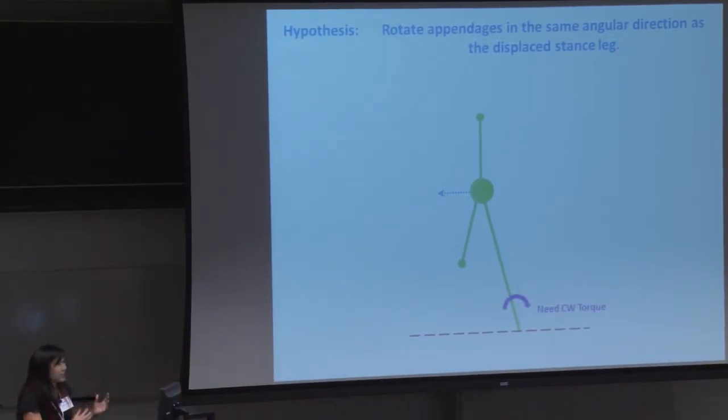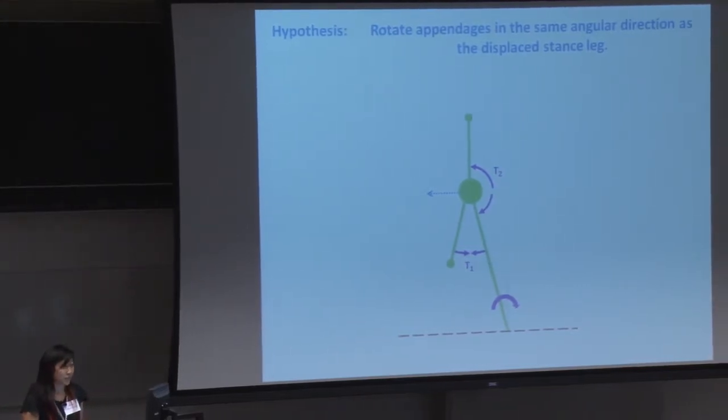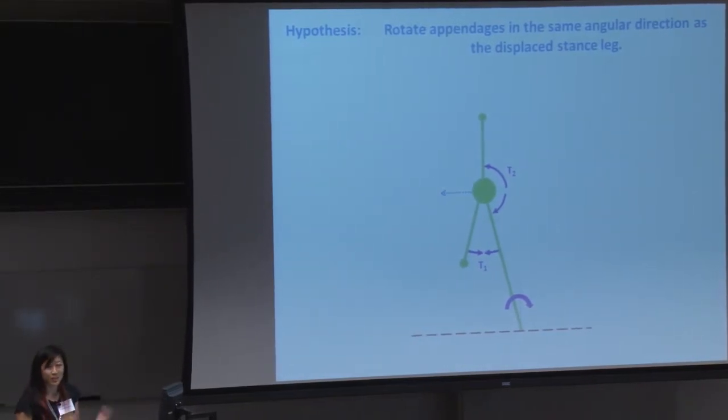So because you're displaced in the counterclockwise direction, you need a clockwise torque to bring you back. And the two components of these clockwise torques can come from these two appendages. So these two appendages need to impart a clockwise torque onto your stance leg. So this also means that the appendage torques themselves are in the counterclockwise direction. So again, if your stance leg is displaced in the counterclockwise direction, you need to rotate your appendages in the same direction, which is again in the counterclockwise direction.